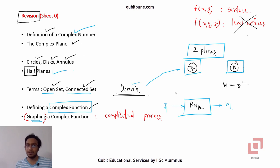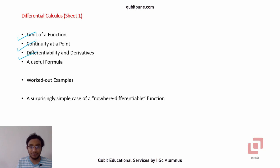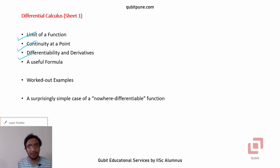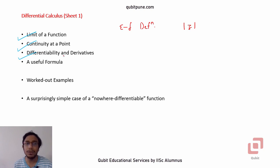Let us now begin the actual differential calculus part. In this section, we are going to define the terms limit, continuity, and differentiability for functions of a single complex variable. We already know how we define the limit formally with the help of the epsilon and delta definition, so we are going to take the help of the same epsilon and delta definition here. We will also take the help of the modulus of a complex number. Once we define the limit of a function, it is not too difficult to define continuity at that point.